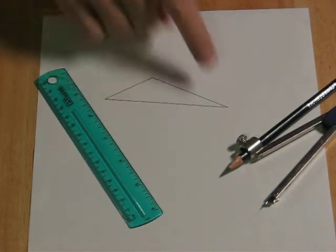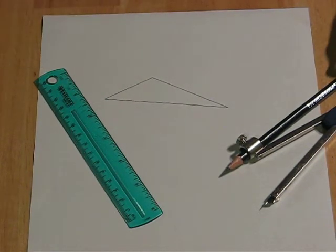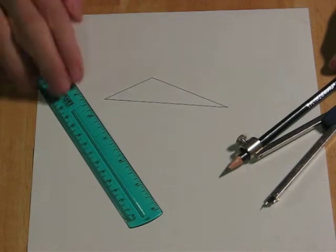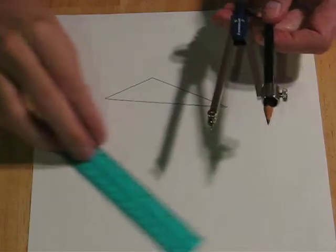Next we will construct the circumcircle for an obtuse triangle. This triangle has an obtuse angle right there, greater than 90 degrees. The procedure is the same though.